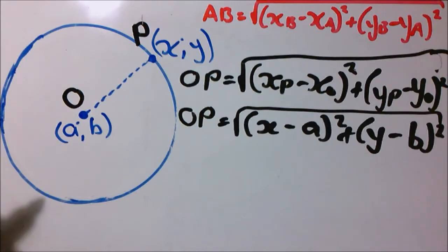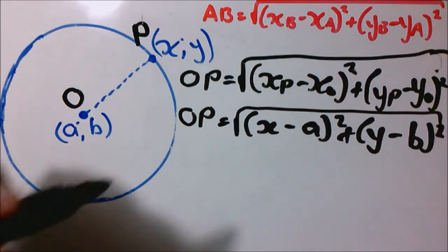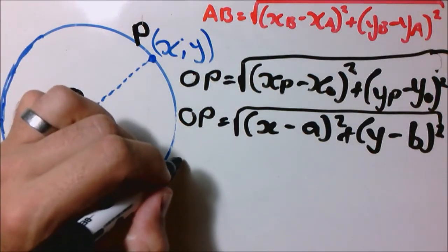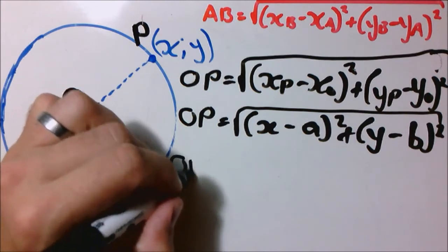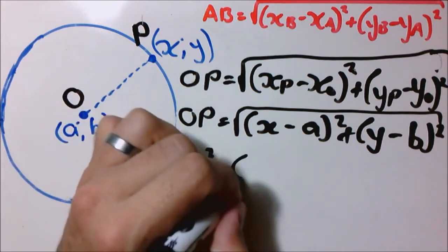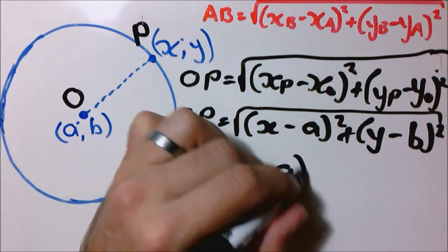Now we can take the square on both sides so it becomes OP square equals bracket X minus A bracket square plus Y minus B bracket square.